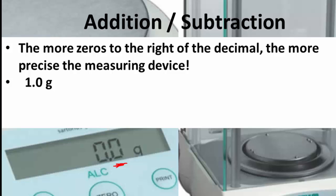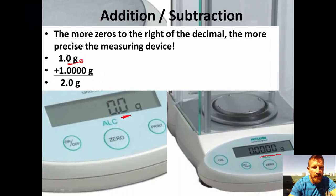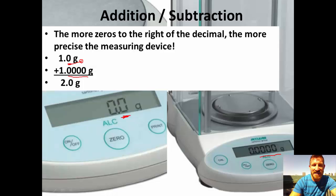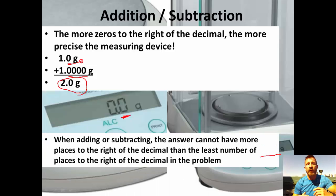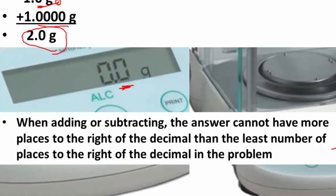Let's say we measured something that was exactly one gram from the balance on the left, and then we measured something that was 1.0000 on the balance on the right. If we added those two masses together, the mass would be 2.0 grams. The one on the left was the least precise — only one place to the right of the decimal — and we can only be as precise as our least precise measurement. When adding or subtracting, the answer cannot have more places to the right of the decimal than the least number of places to the right of the decimal in the problem.